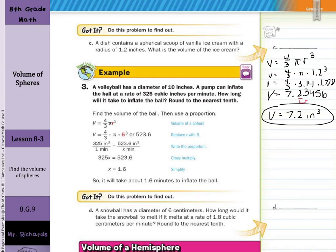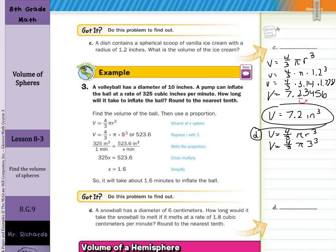A snowball has a diameter of 6 centimeters. How long would it take the snowball to melt if it melts at a rate of 1.8 cubic centimeters per minute? Round to the nearest tenth. First, find the volume using volume equals four-thirds pi r cubed. The diameter is 6, so the radius is 3. Volume equals four-thirds times 3.14 times 27, giving 113.04 cubic centimeters.